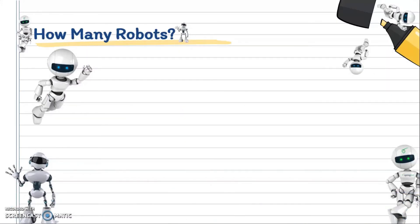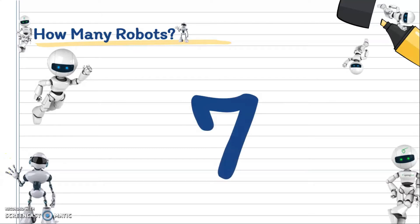Now I would like to ask you: how many robots are there? Are you ready? Let's start counting. Are you done? Great! So how many robots are there? Is it 1, 2, 3, 4, 10, or 14? The answer is there are 7 robots. So today we are going to learn about the body parts of the robots. Are you ready?